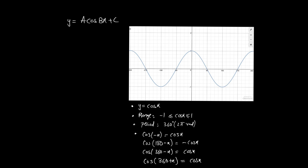For a cosine function, y = a cos(bx) + c: a is the amplitude, b refers to the number of cosine cycles within 360 degrees, and c is the axis of rotation. A typical cosine curve has cos(0°) = 1, cos(90°) = 0, cos(180°) = -1, cos(270°) = 0, and cos(360°) = 1. The range of cos(x) is also from -1 to 1 and the period is 360 degrees.